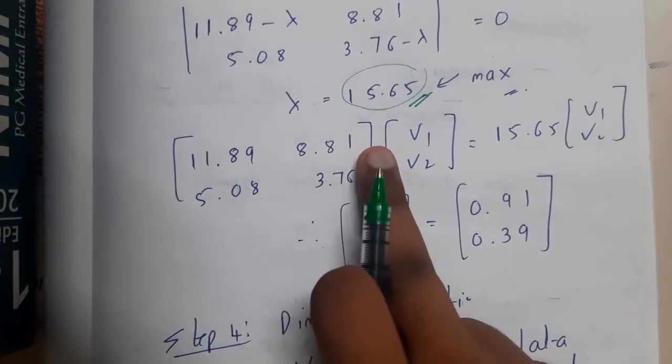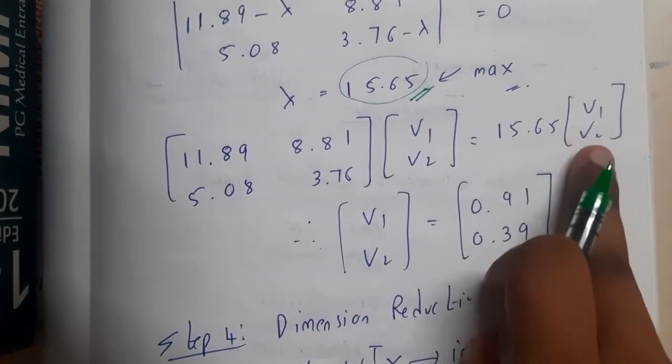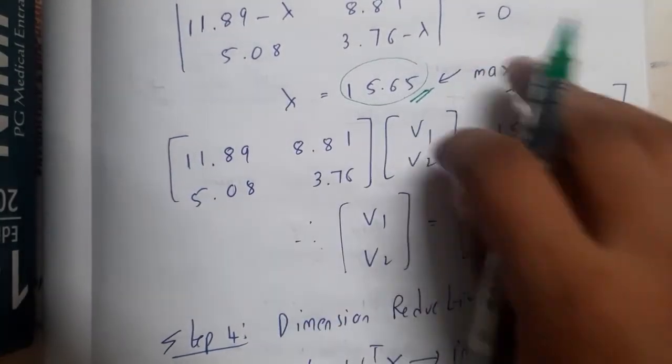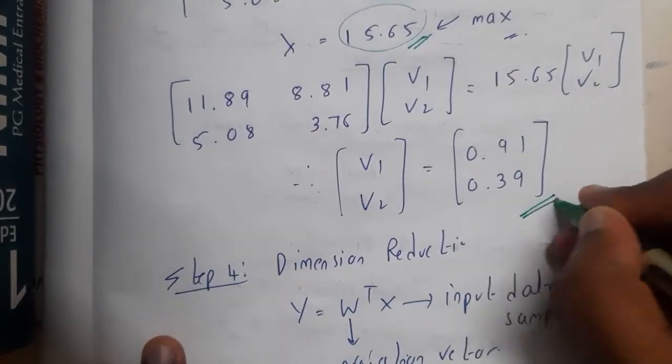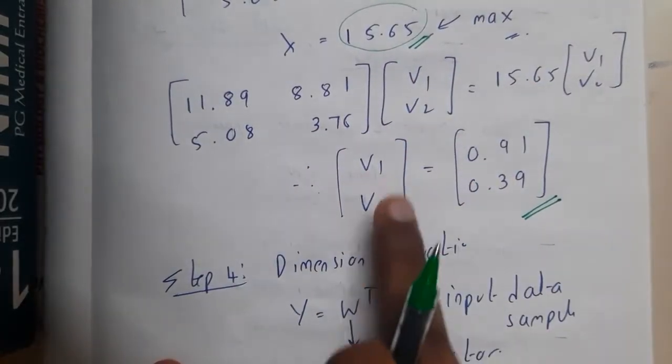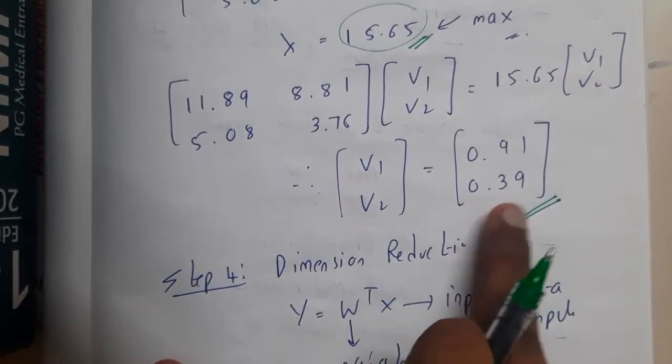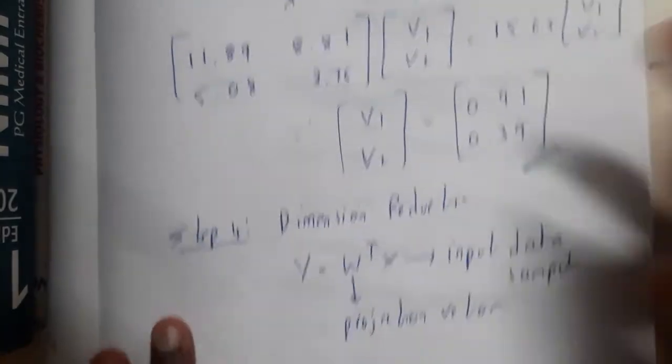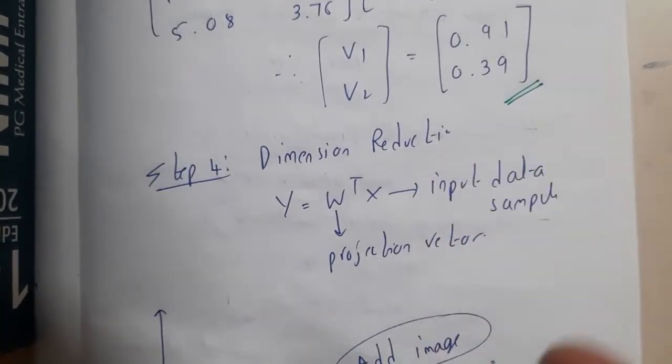This matrix, the original matrix we are having, you will be writing that matrix into v1. On the other side, you will be multiplying with v1 into v2. You will be solving this value, so you will be ending up with this value. If you do matrix multiplication and find v1 and v2 values, v1 value is 0.91, v2 value is 0.39.